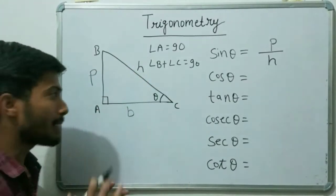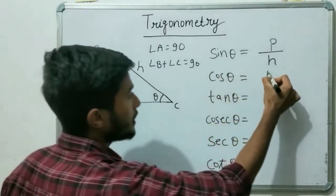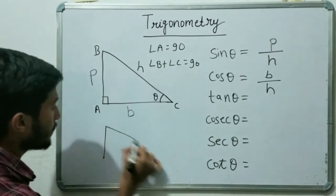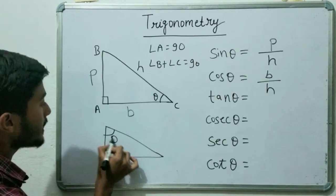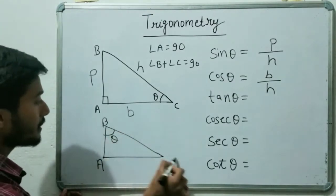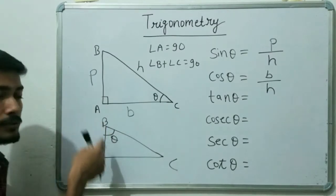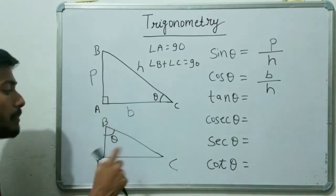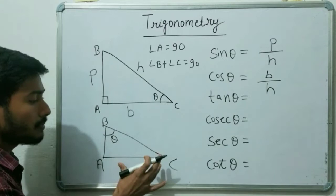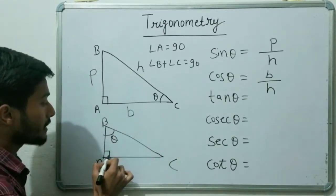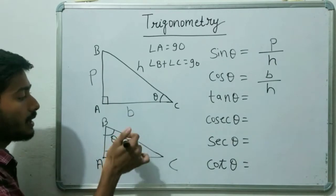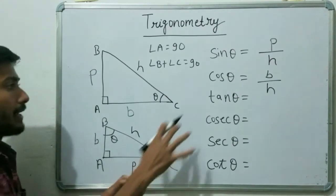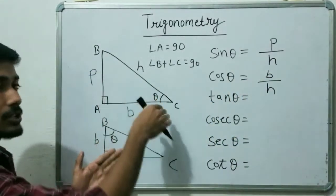Cos theta equals base upon hypotenuse. One important thing to note: the position of theta determines which side is the base. If theta is at a different vertex, then AB becomes the base instead of AC. The perpendicular and base switch depending on where theta is. The hypotenuse is always in front of the 90-degree angle — it stays fixed.